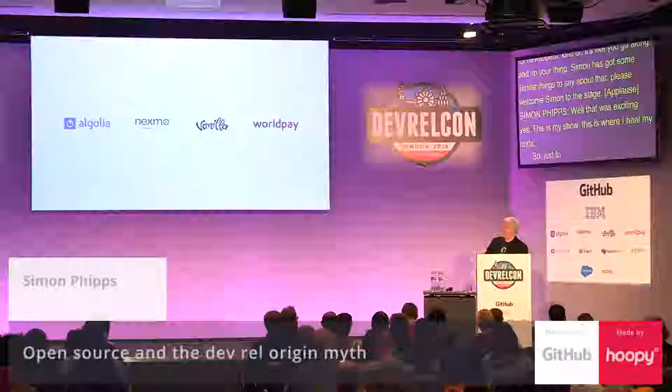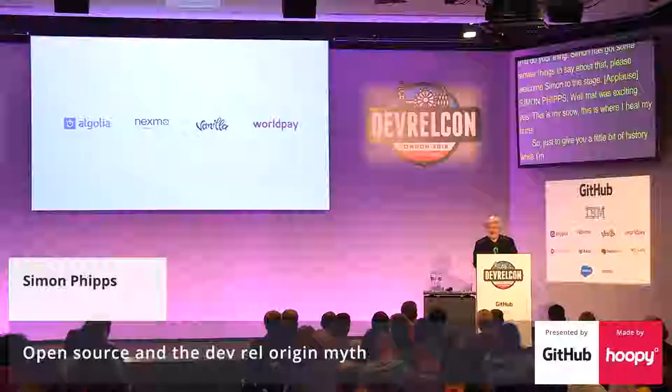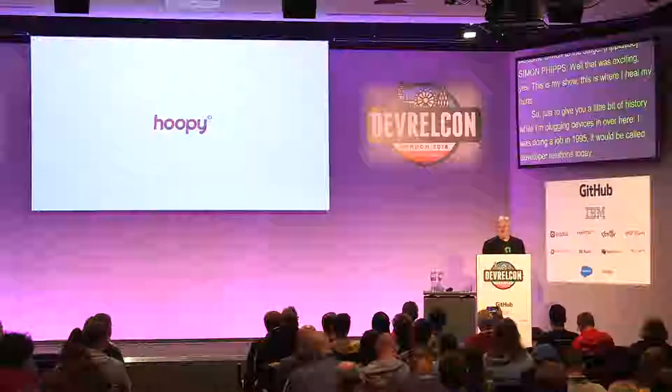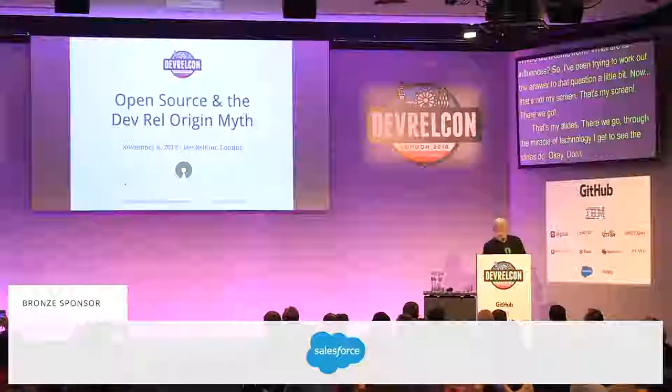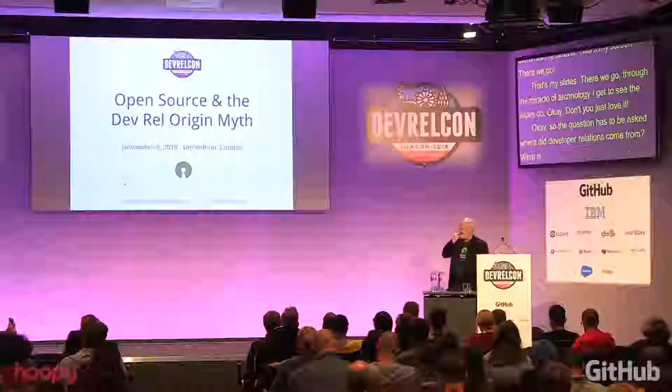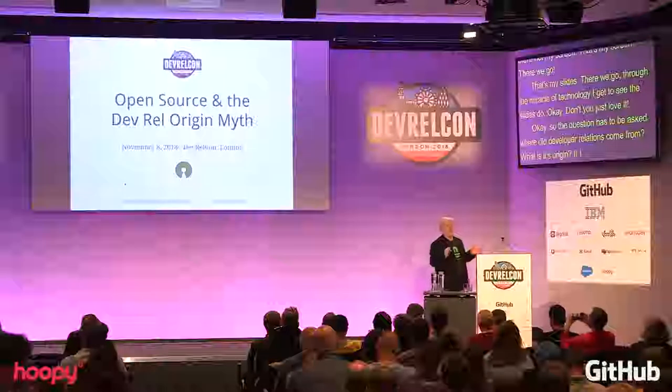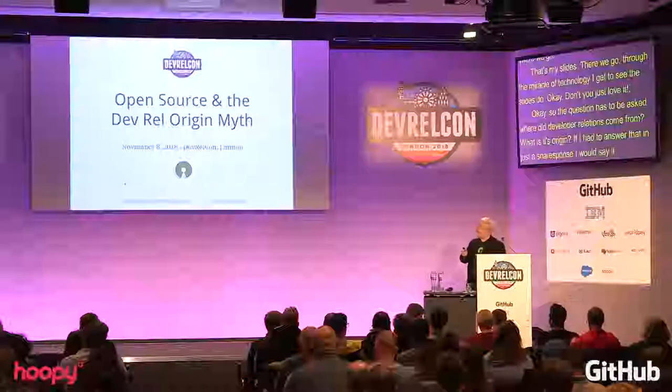Just to give you a little bit of history: I was doing a job in 1995 that I think would be called developer relations today. I was IBM's Java evangelist, starting the Java Technology Center in 1995, and that made me wonder what exactly is the origin of developer relations — where did it come from, what are its influences? If I had to answer that question in a snap response, I'd say it came from the free software movement.